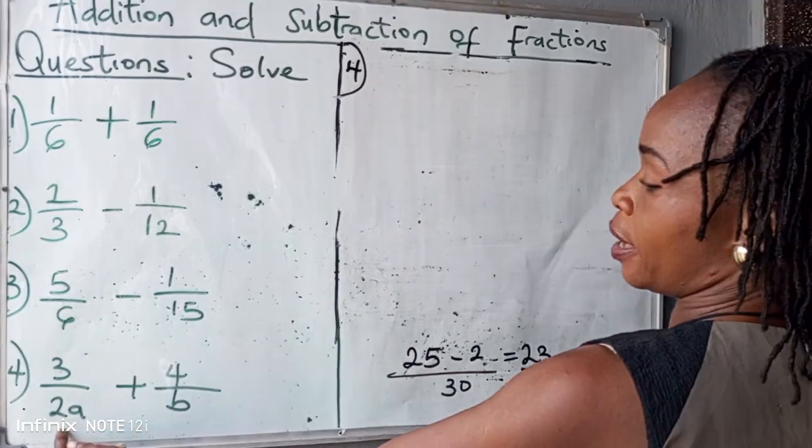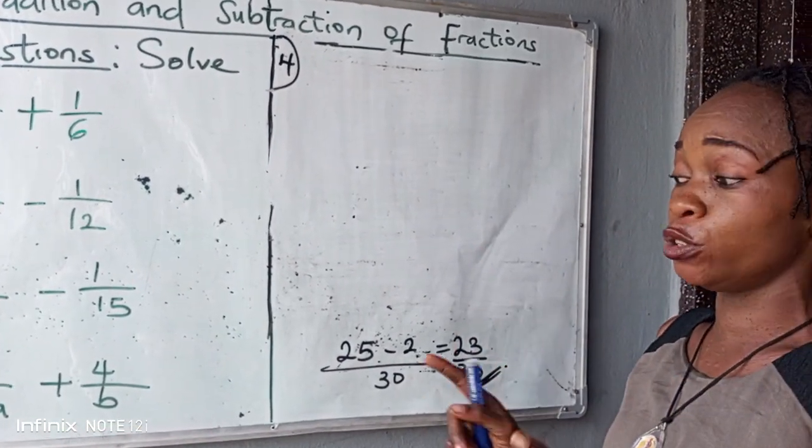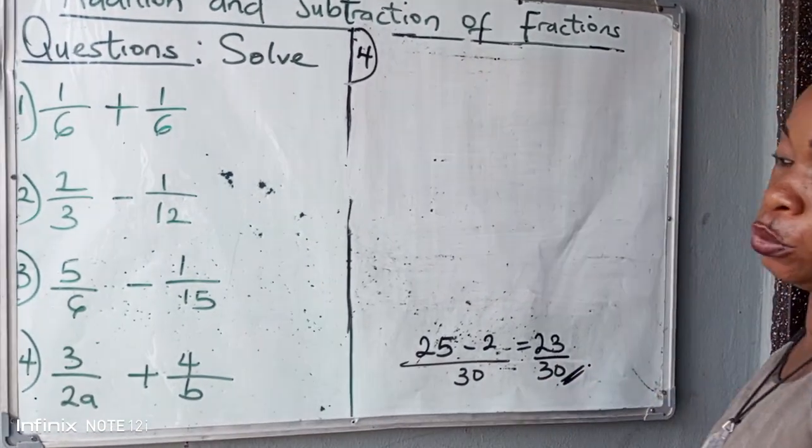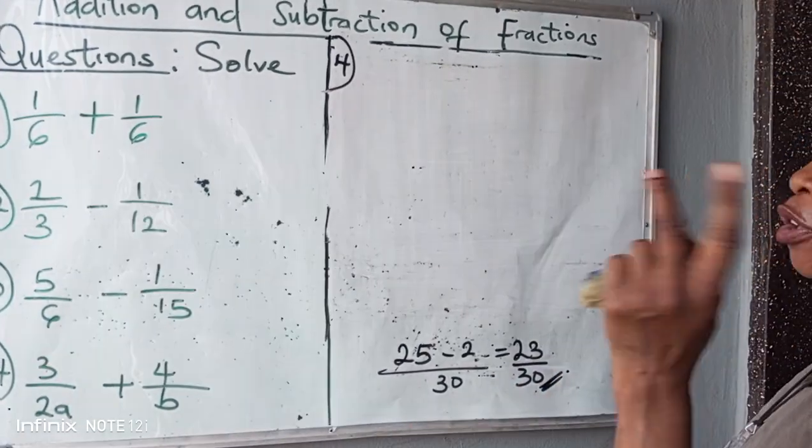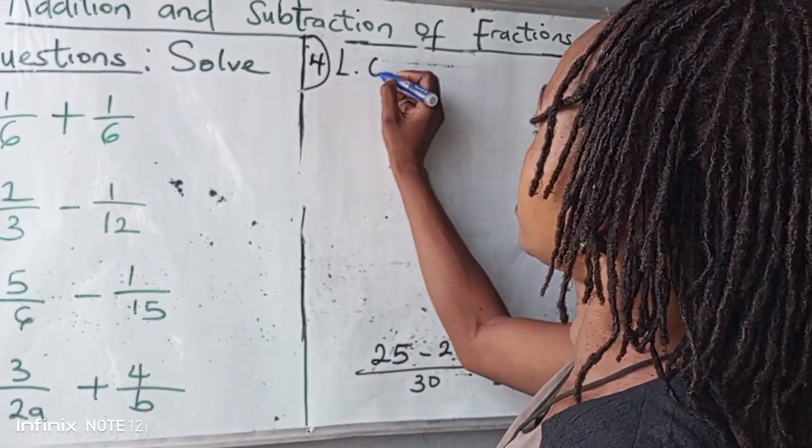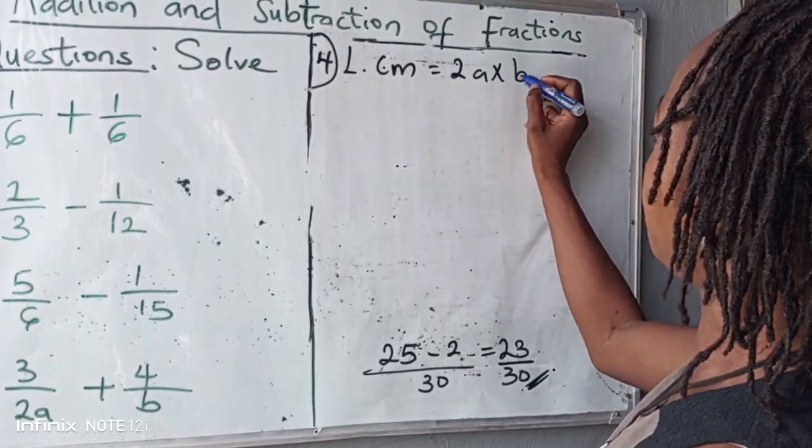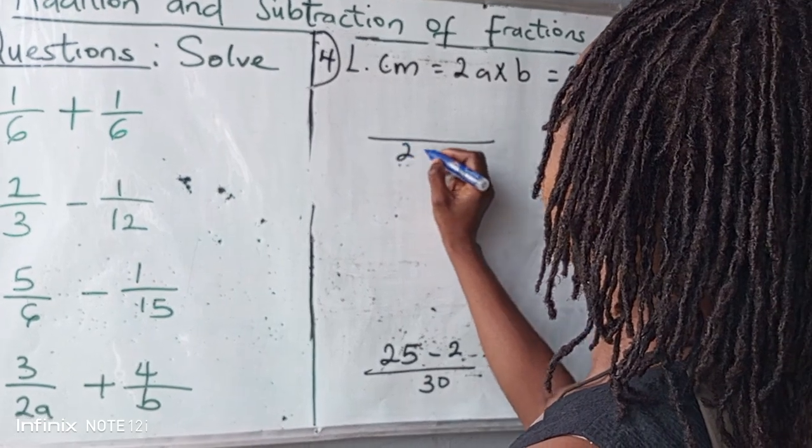Question number four. We have two A and B. They are both uncommon denominators. There is nothing common here. So what do we do? Multiply the two denominators to give you your LCM. So your LCM will be equal to two A multiplied by B, which is equal to two A B.